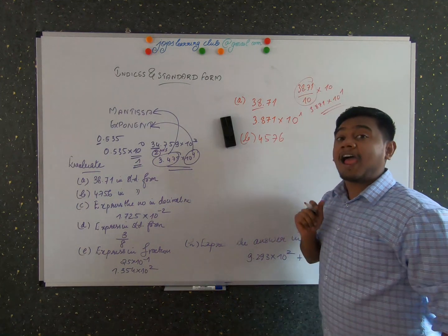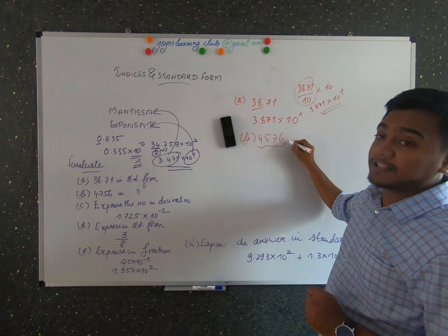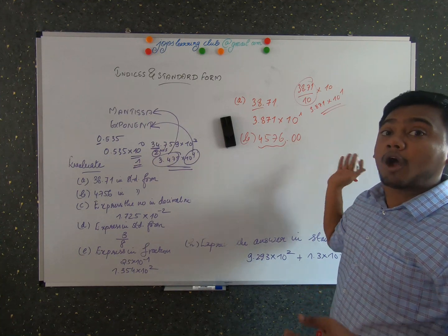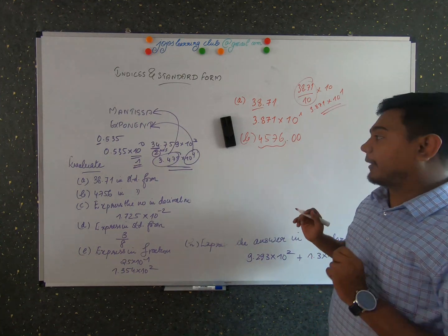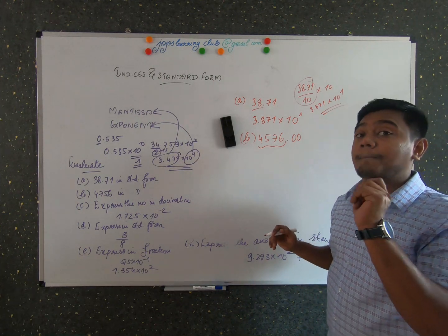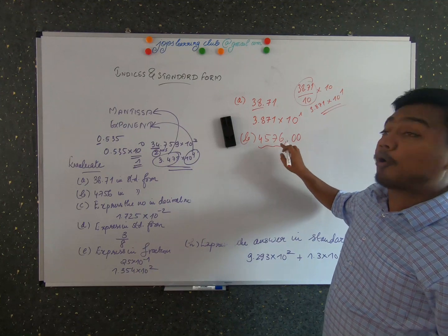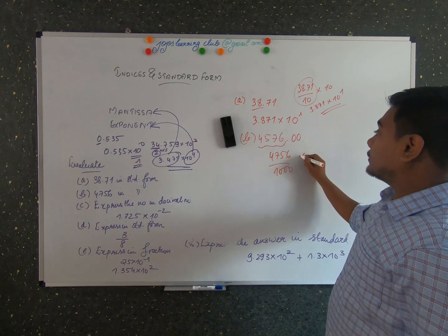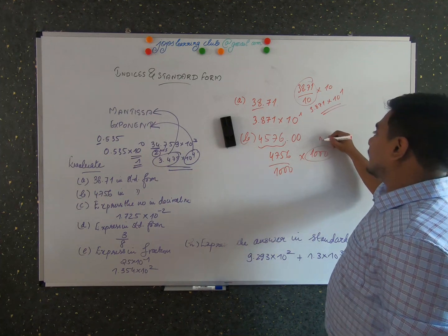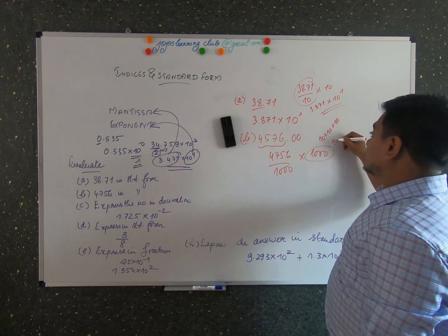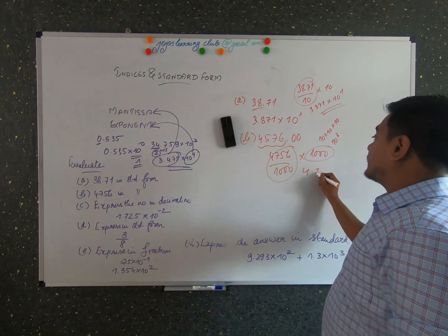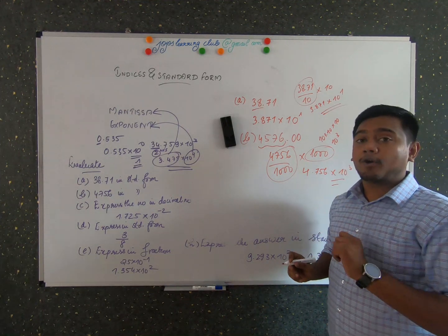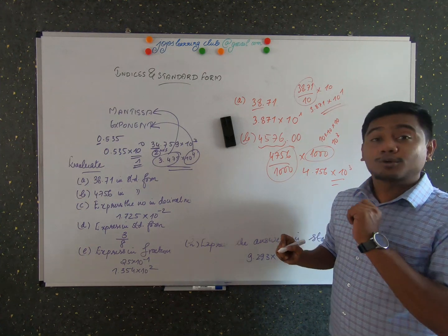Problem 8b: convert 4576 into standard form. This number has no decimal point — you can append a decimal point and zeros. For standard form there should be only one number to the left of the decimal point, but there are four digits. So you divide by 1000 and multiply by 1000. 1000 is 10 × 10 × 10 = 10³, giving 4.576 × 10³.